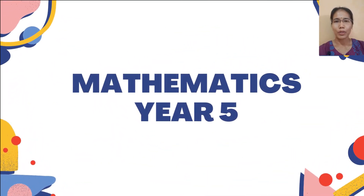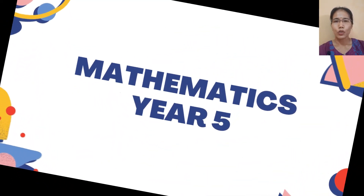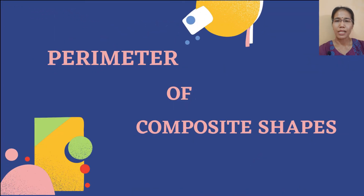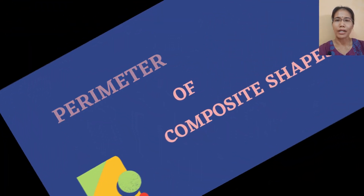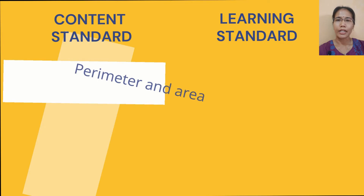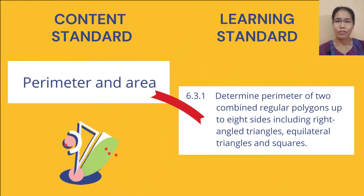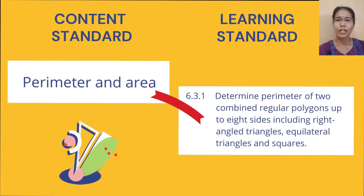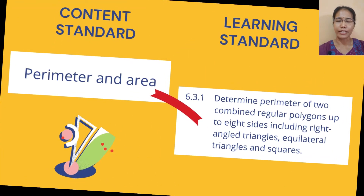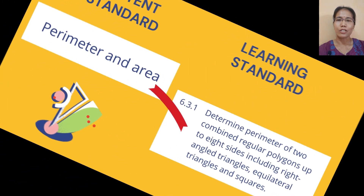Hi everyone, welcome to class today. Today we will learn how to find the perimeter of two combined irregular polygons including right angle triangle, equilateral triangle, and square.